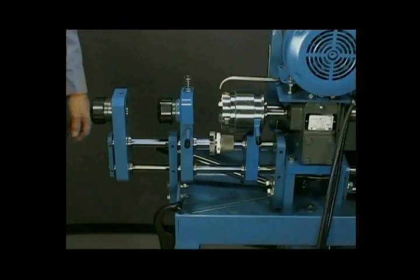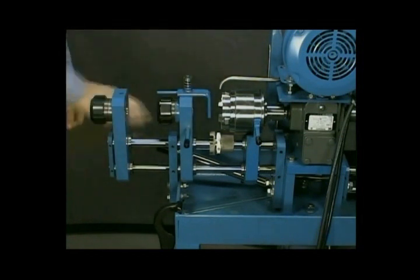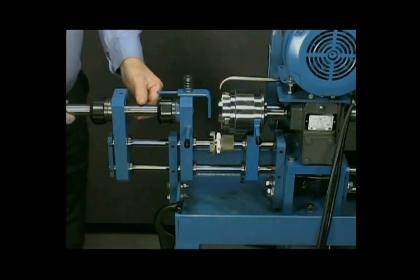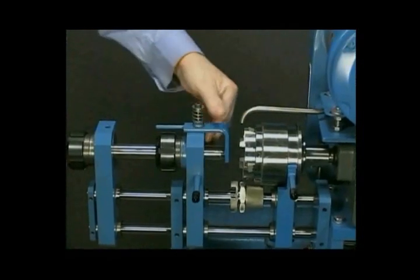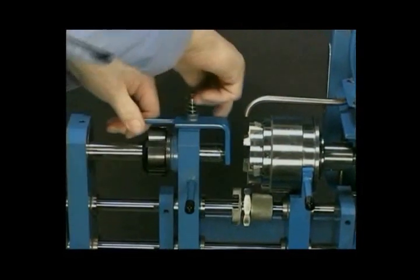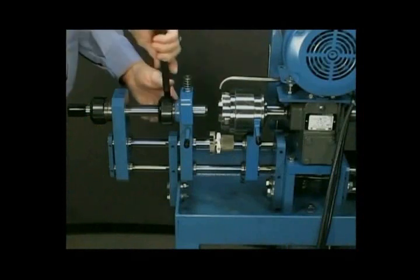For proper thread length, first rotate the tube stop forward towards the die head. Insert the tube and slide it through the collet until it touches the tube stop. Turn the collet nut finger tight, then rotate the tube stop back to its original position. Then, using a spanner wrench, tighten the collet nut.